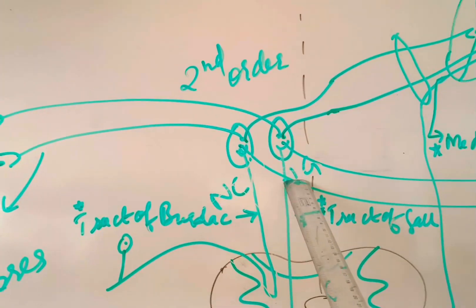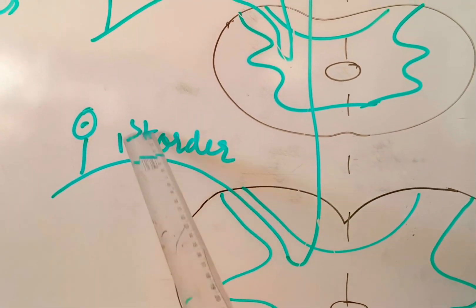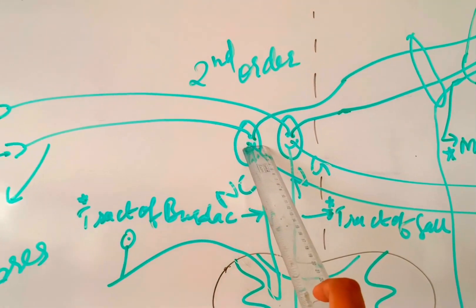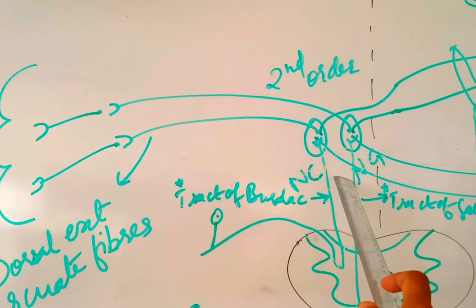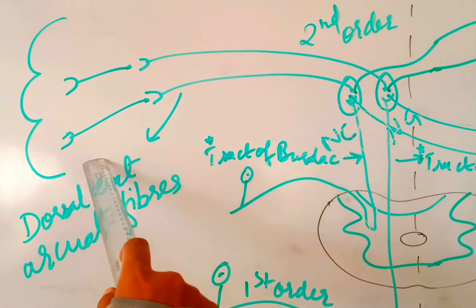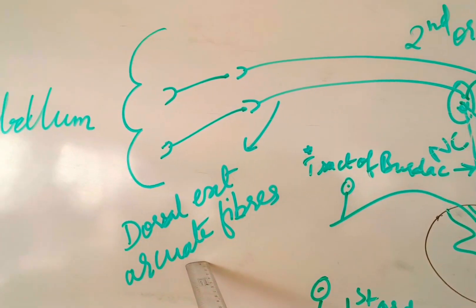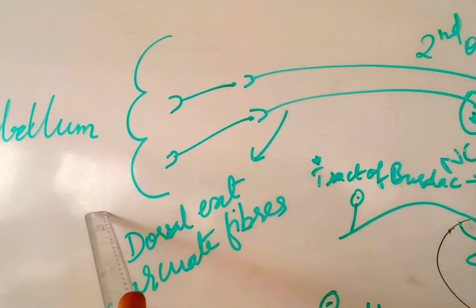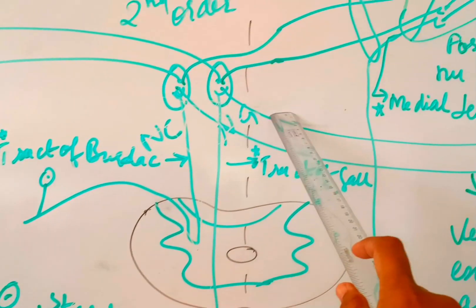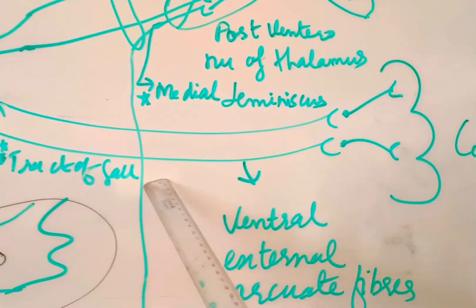These neurons constitute the second order of neuron, and the axons of these neurons have three different terminations. These are dorsal external arcuate fibers. They go to the cerebellum of the same side.